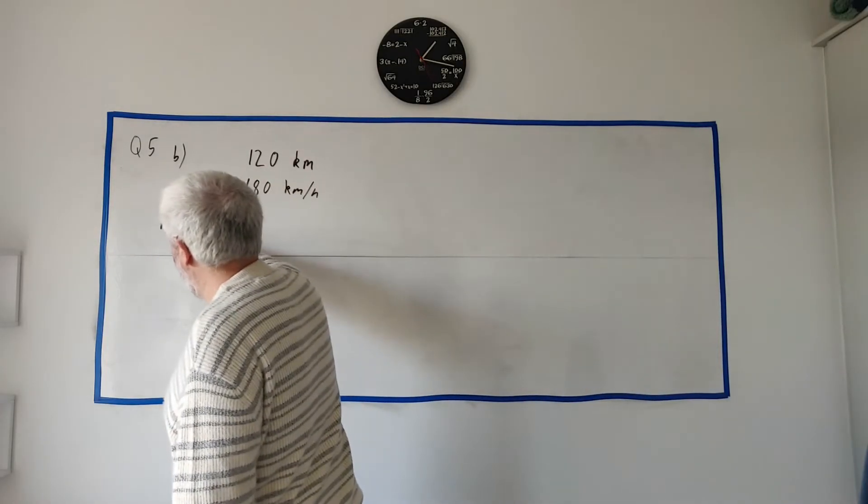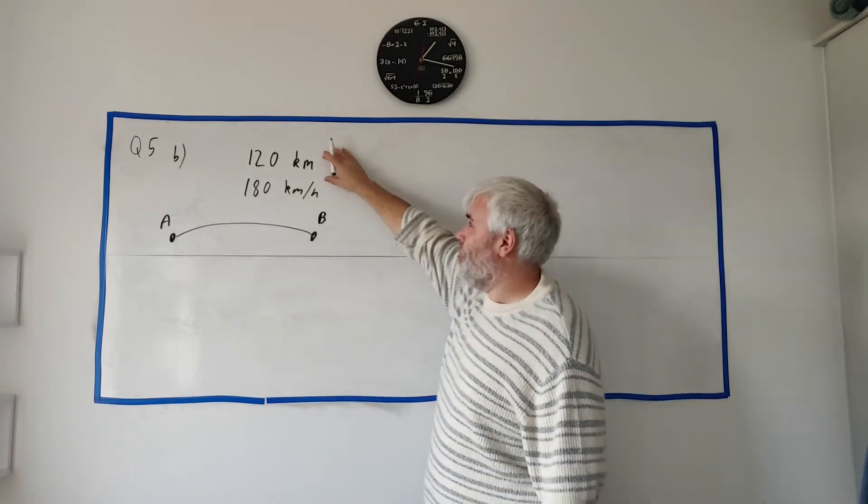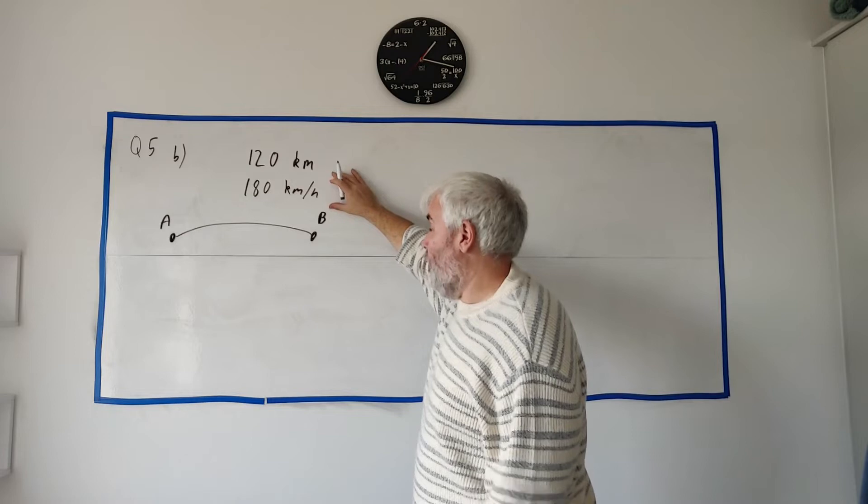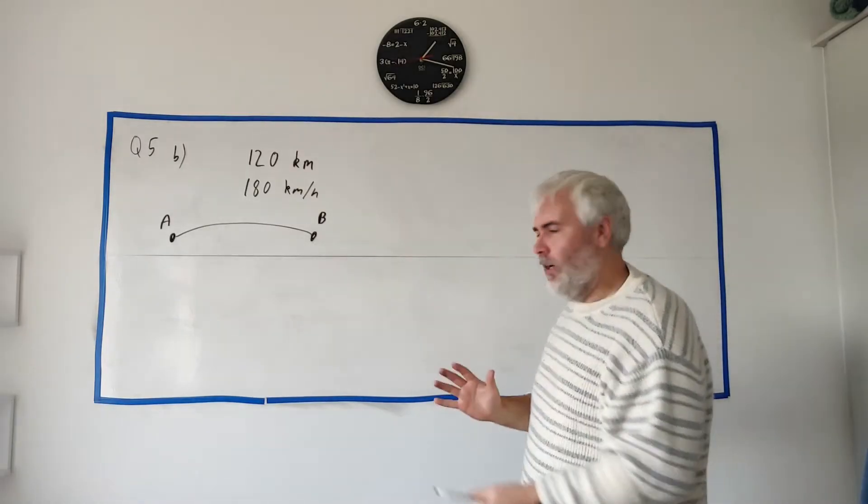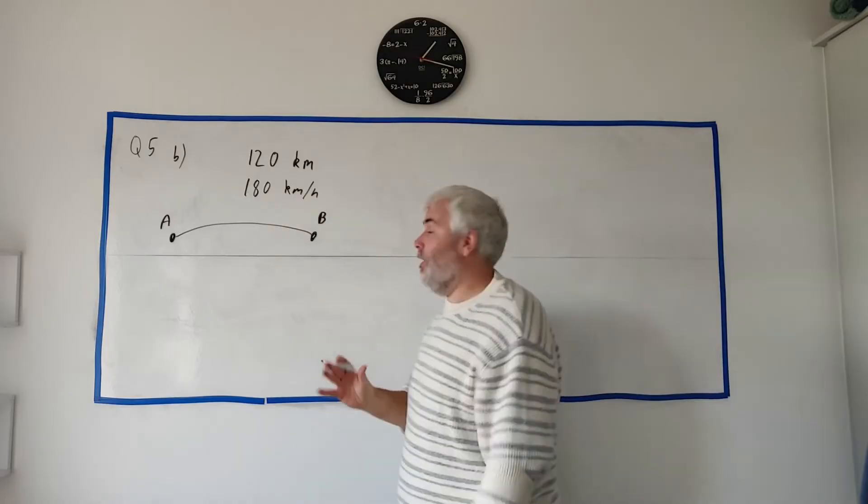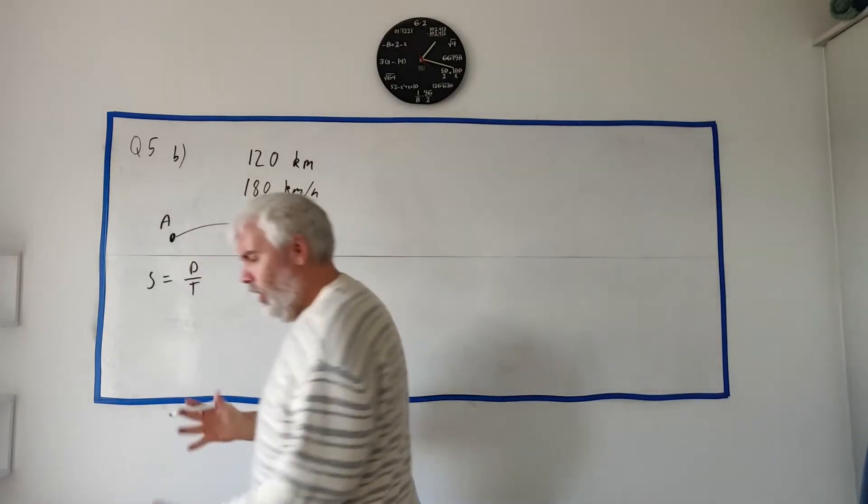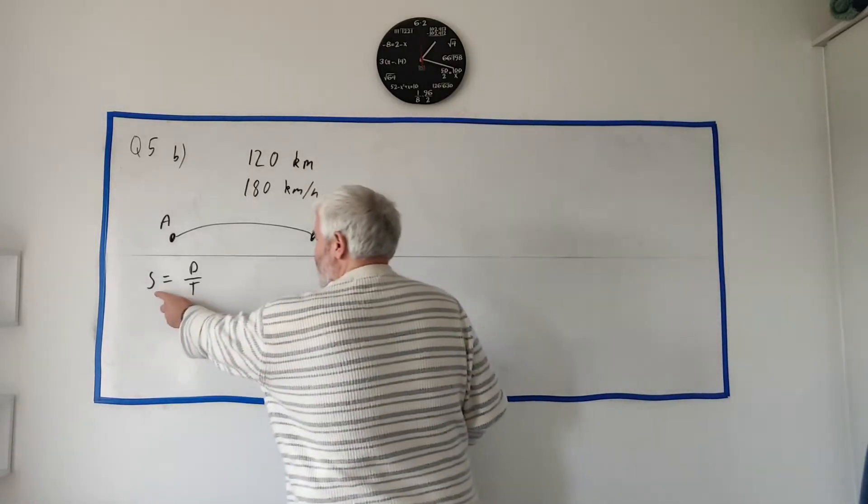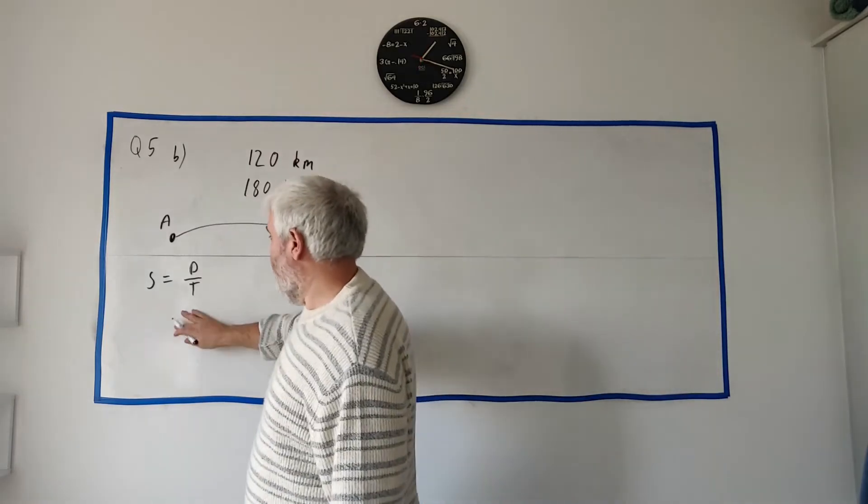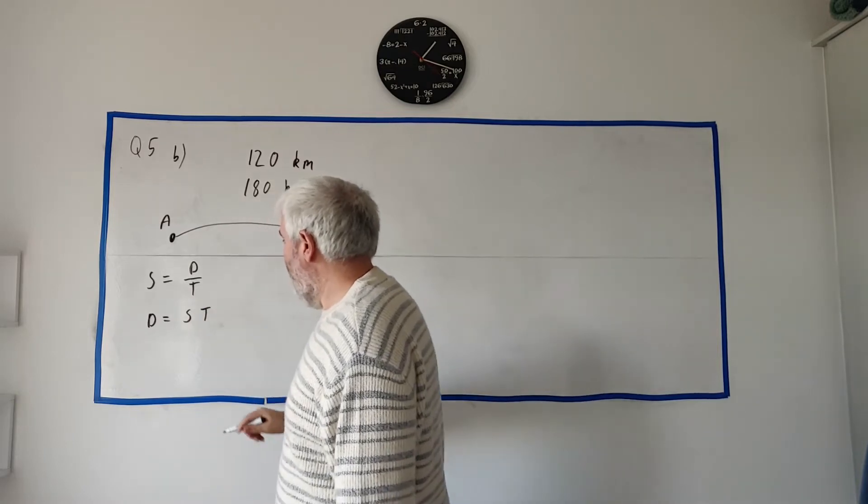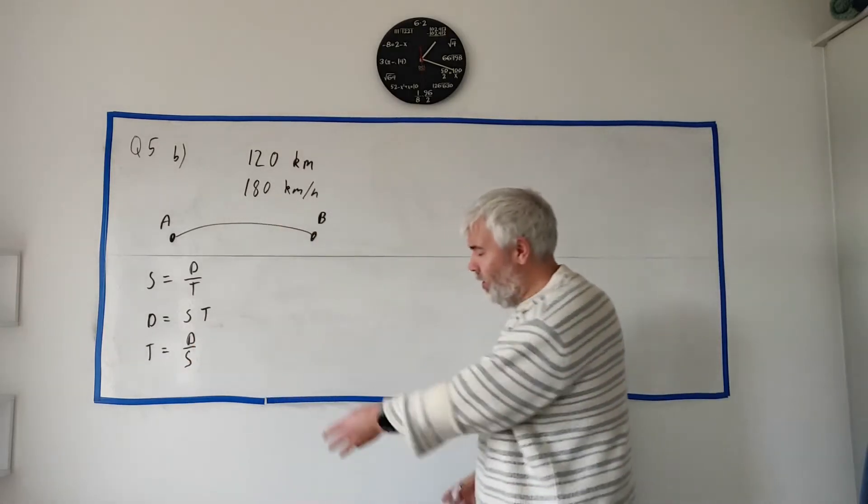On to part B. We have two towns, A and B, and a train goes between them. They tell us the distance between the towns is 120 kilometers and the speed the train goes is 180. They're simply asking us for the time. You could do this with ratios like I did in part A, but really we have formulas for this one. Speed is equal to distance over time. D would be equal to S times T, and T would be equal to D over S.